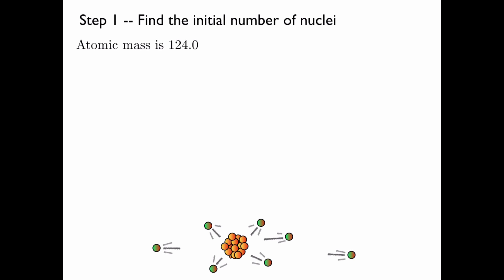The atomic mass of this isotope is 124, which implies that there is an Avogadro's number of nuclei, i.e. 6.02 times 10 to the 23 nuclei, in 124 grams. That's what that means to have an atomic mass of 124.